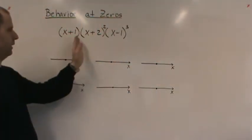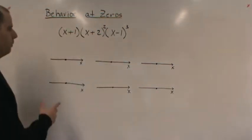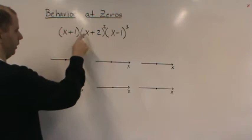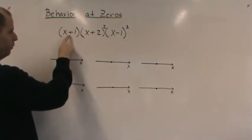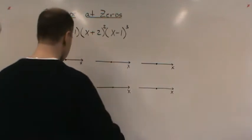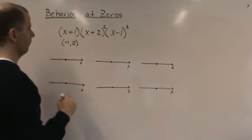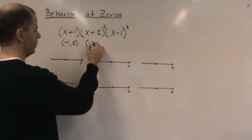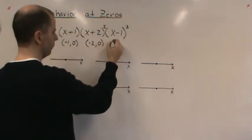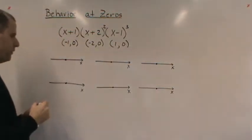I've put up an example of a polynomial in factored form. By the zero product principle, we find zeros by setting each factor to zero. When x is negative one, y is zero, so we have a zero at (−1, 0). We also have a zero at (−2, 0) because when x is negative two, y is zero. And we have one at (1, 0). So we have three zeros.